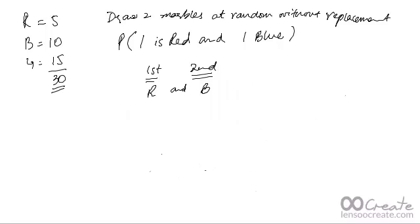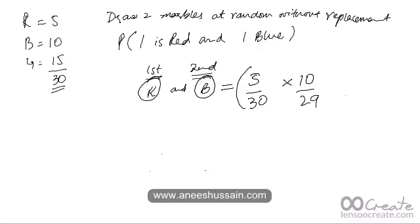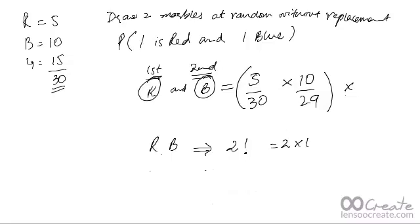The same question can be solved in a slightly different, quicker way. You figure out the probability of just one possible arrangement — say the first is red and the second is blue: 5/30 × 10/29. Then multiply by the number of ways of arranging R and B, which is 2 factorial = 2 × 1 = 2. Multiplying by 2 gives 10 out of 87 — the same answer, saving you time.